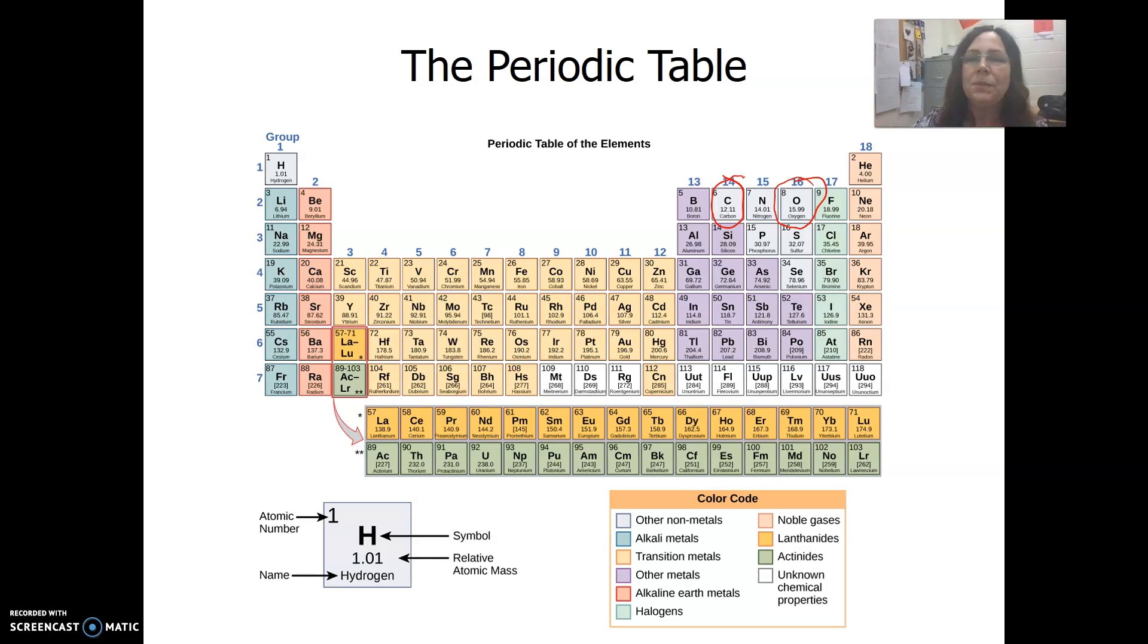If we take oxygen, for example, oxygen has an atomic number of 8, so that gives oxygen 8 protons. We know the number of electrons is equal to the protons, so oxygen has 8 electrons. If you find the mass number by rounding, that's 16. So 16 minus 8 will give you the number of neutrons. In this case, it's 8 neutrons.